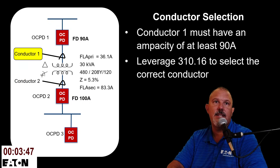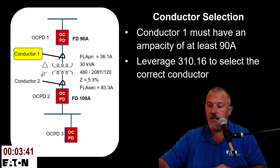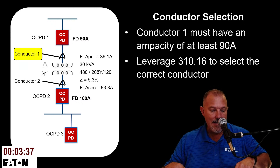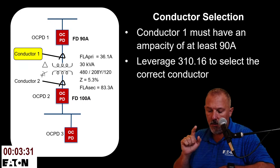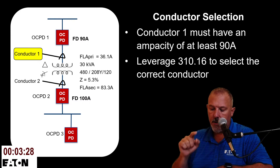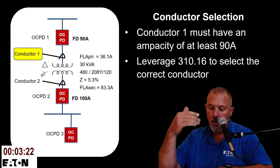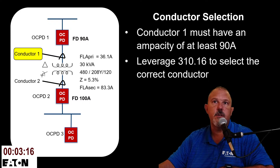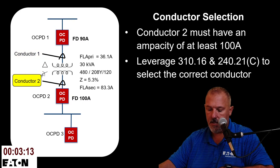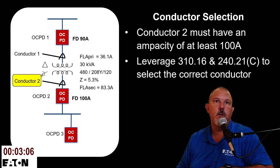For the primary conductors, we reference Table 310.16. The ampacity must be at least 90 amps, so a #3 AWG conductor rated 100 amps meets that requirement. A #4 AWG at 85 amps would also work since I can go to the next size up under Article 240 rules — so either #3 or #4 is acceptable on the primary.